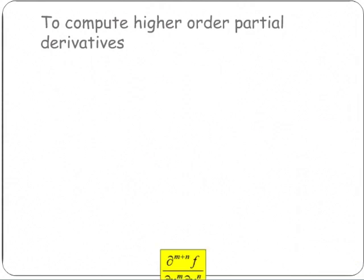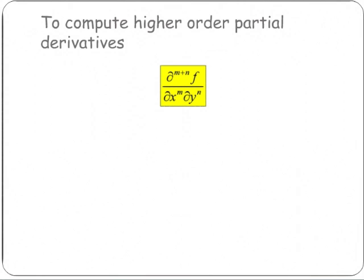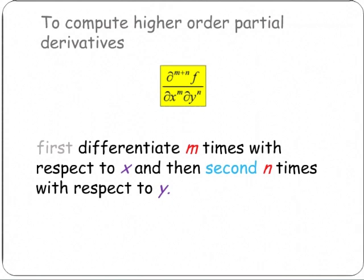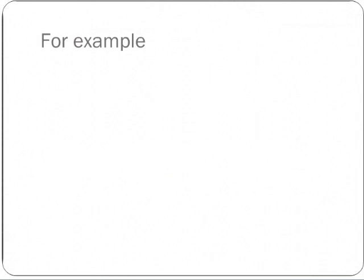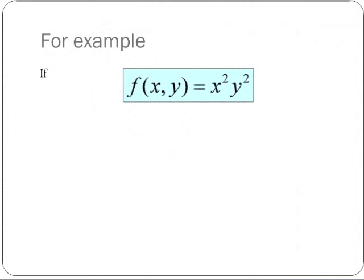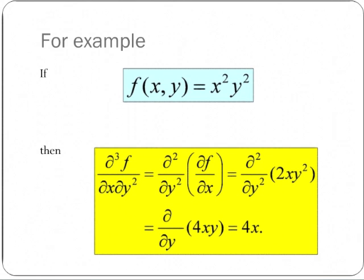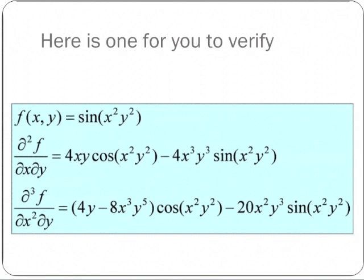Now, to compute higher order partial derivatives — for instance, the partial d^(m+n) of f by dx^m dy^n — first differentiate m times with respect to x and then n times with respect to y. For example, if f of x, y is x squared y squared, then d³f / dx dy² is d² by dy² of df dx, which is d² by dy² of 2xy squared, which is d by dy of 4xy, which is just 4x. You'll need to go through this carefully yourself. Here are some for you to verify.